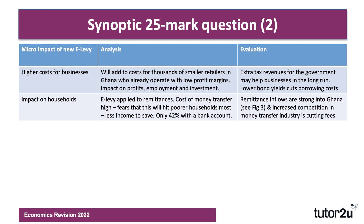Only 42% of people have a bank account. Remittance inflows are strong into Ghana — 1.5% of GDP according to Figure 3. And there's increasing competition between money transfer businesses. So in fact, some of those businesses might decide, for commercial reasons, not to pass on the tax, which could offset the impact on consumers.